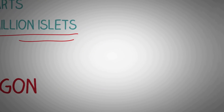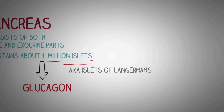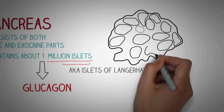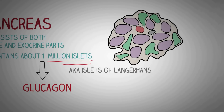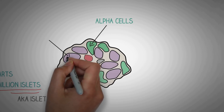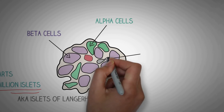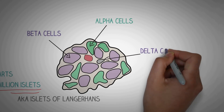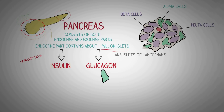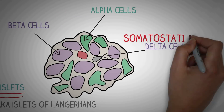Pancreatic islets, also known as the islets of Langerhans, are irregularly shaped patches of endocrine tissue present in the tail of the pancreas. They contain different types of cells: alpha cells, beta cells, and delta cells. The alpha cells secrete glucagon, the beta cells secrete insulin, and the delta cells produce somatostatin.